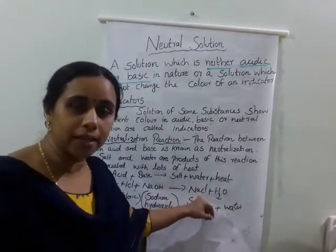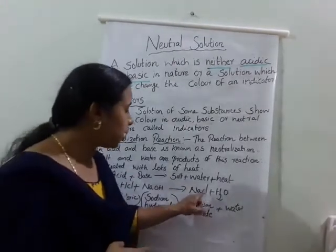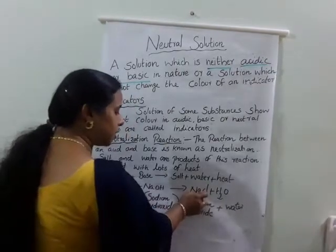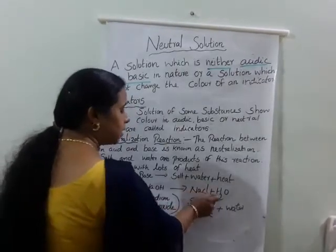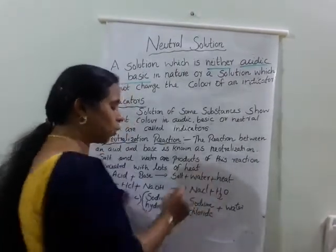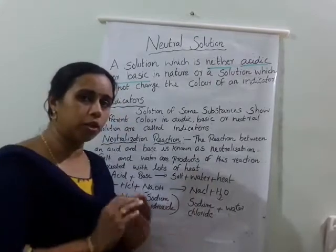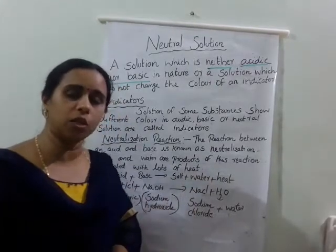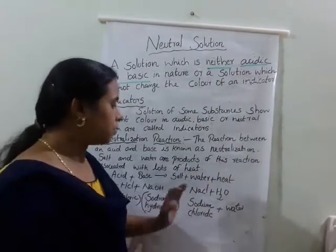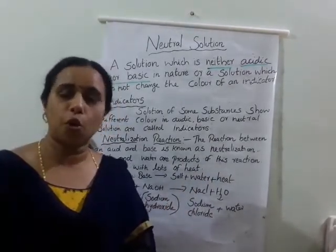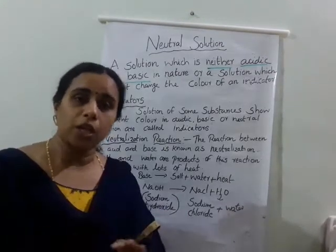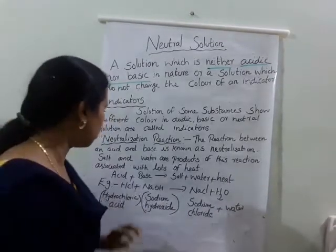When they combine with each other, there is the formation of one salt — sodium chloride. Na indicates sodium, Cl indicates chlorine, together: sodium chloride. At the same time there is the production of water and heat.